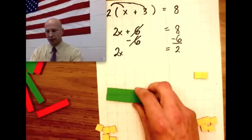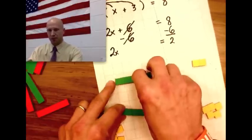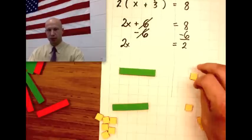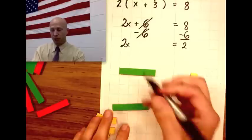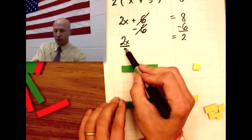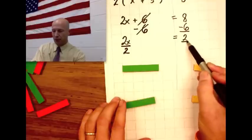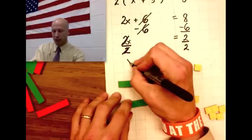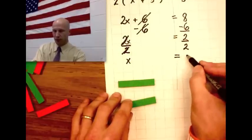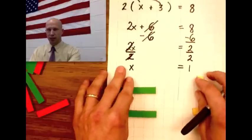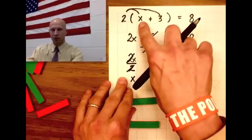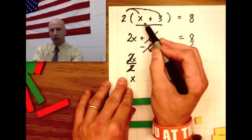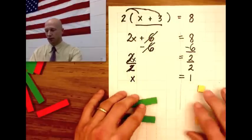Now I'm down to my last step. I know I'm going to have to split these two x's up, and split these two up as well. I can see here that x equals 1. When I divided that into two groups, I was really dividing by 2, and we show that with a fraction bar. 2x divided by 2 leaves me with just 1x, and 2 divided by 2 is 1, so x equals 1. I can go back and double-check myself — if I put 1 in place of x, I get 2 times 1 plus 3. 1 plus 3 is 4, and 2 times 4 is indeed 8. So I have done this equation correctly.